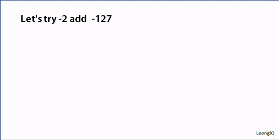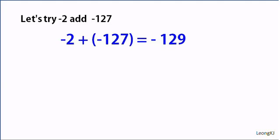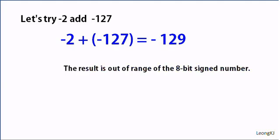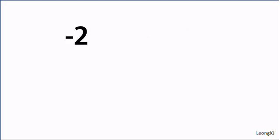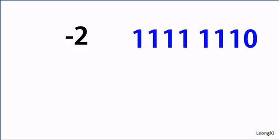Let's try adding negative 2 to negative 117. The result is negative 119. This result is out of range for an 8-bit signed operation. How does the computer processor indicate that this operation is out of range? Let's see how the computer processor would perform the operation.